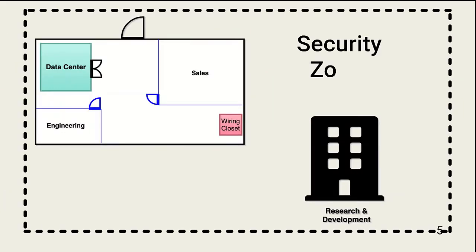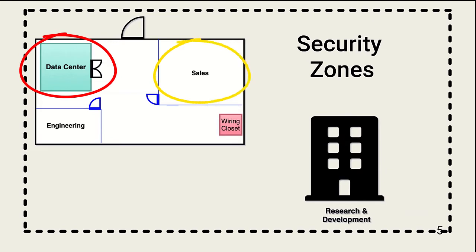Before we look at specific physical security environmental controls, we need to understand the different areas of the organization that may require different levels of security. The various security areas are usually called security zones. Each security zone is assessed for the risk associated with physical access. For example, unauthorized access to the data center has a high risk, and access to sales is a much lower risk. Applying the right controls in each risk case enables focusing mitigation where needed.